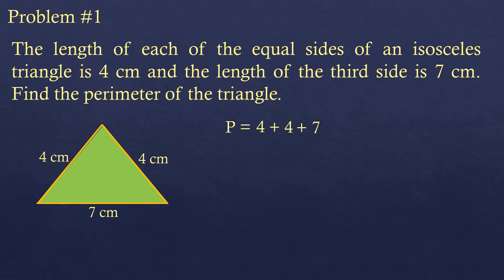Whether a figure has five, six, or ten sides, you just add them all — that is the basic idea of perimeter. Alternatively, you can do four times two plus seven since there are two equal fours. Solving: four plus four is eight, and eight plus seven is 15. The perimeter is 15 centimeters — that is the total length of all three sides.